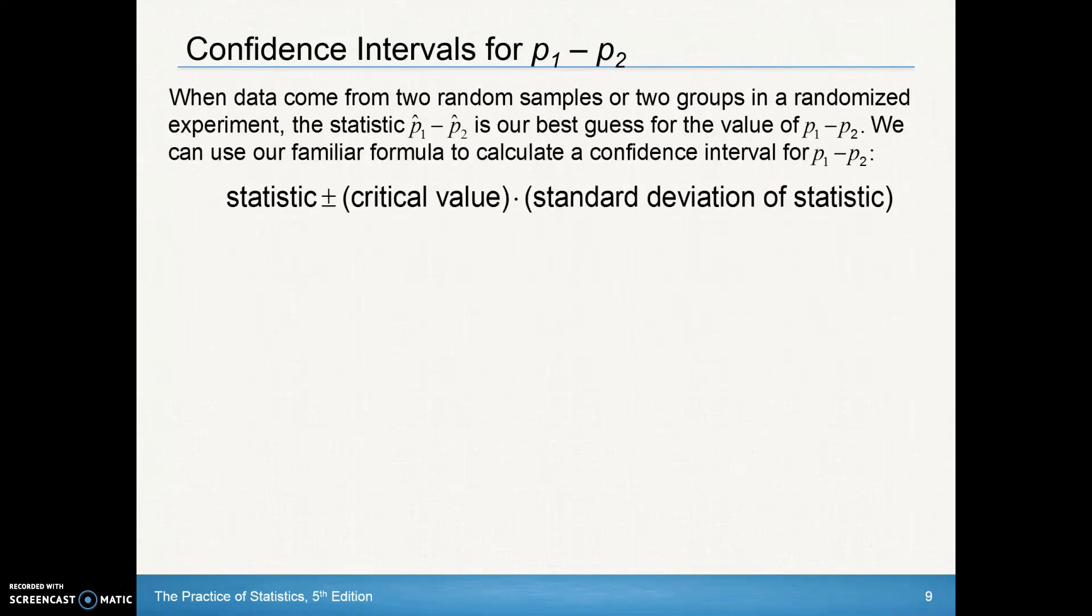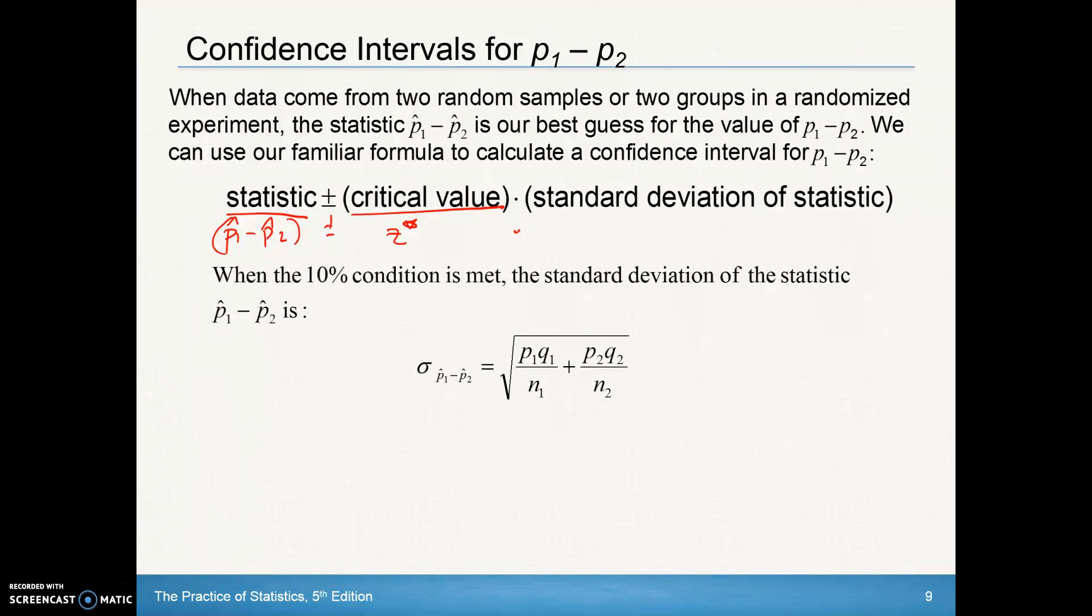We move into confidence intervals. Reflecting back to Chapter 8 and how we calculated confidence intervals, we always had our statistic. In this case, it's our P-hat-1 minus P-hat-2, plus or minus our critical value—remember our Z-star. We'll look at common Z-stars in a few minutes—times that standard deviation of the statistic.